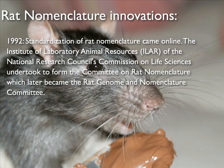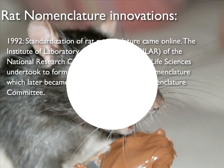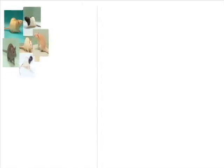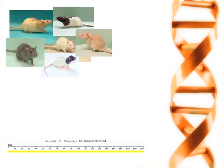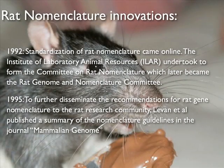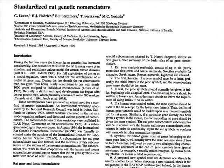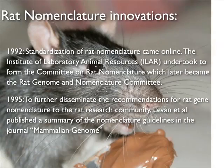Standardization of rat nomenclature came online in 1992 when the Institute of Laboratory Animal Resources, ILAR, of the National Research Council's Commission on Life Sciences, undertook to form the Committee on Rat Nomenclature, which later became the Rat Genome and Nomenclature Committee. The report of this committee was published in the ILAR News and covered nomenclature recommendations for rat strains, genes, and non-genic loci. Levin et al. then published a summary of nomenclature guidelines in the journal Mammalian Genome in 1995.